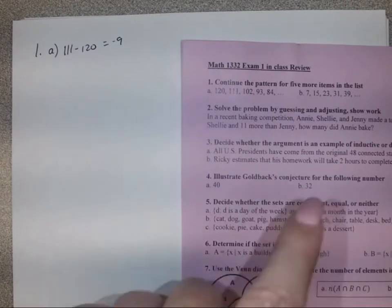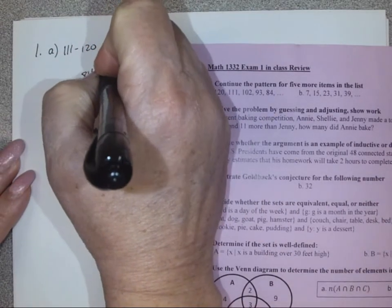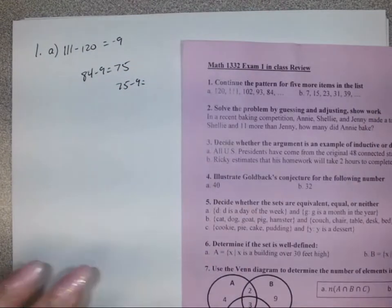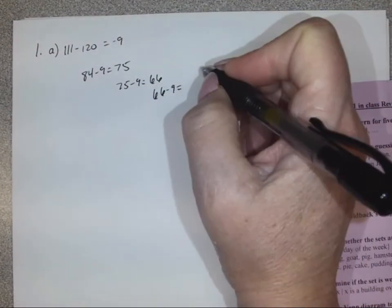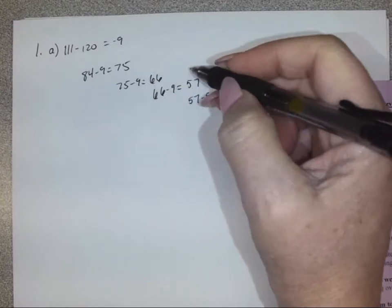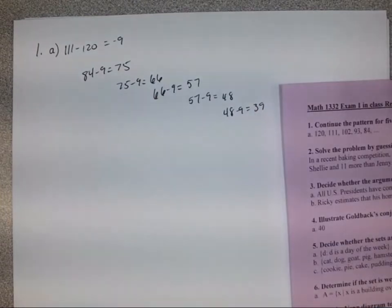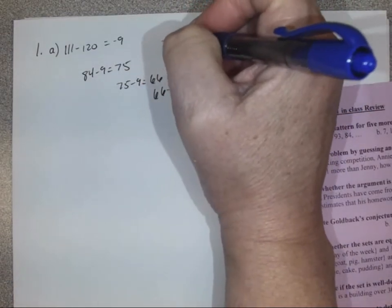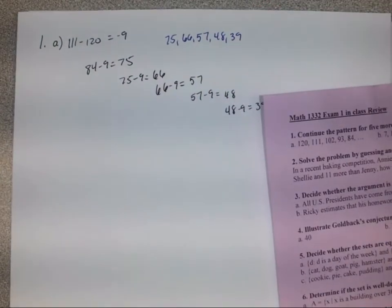We needed to find the next five items in the list, starting from 84. So 84 minus 9 gives us 75, 75 minus 9 gives us 66, 66 minus 9 gives us 57, 57 minus 9 gives us 48, and 48 minus 9 gives us 39. So the next five terms are 75, 66, 57, 48, and 39. Those are the answers.